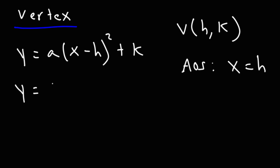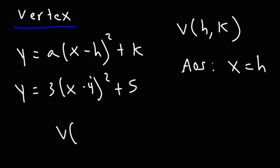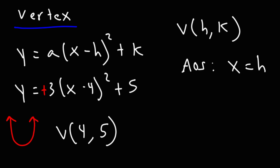For instance, if we have y = 3(x − 4)² + 5, even though you see negative four inside, you change the sign: h = 4, k = 5, so the vertex is (4, 5). Since a is positive, the parabola opens upward, which means the vertex represents a minimum. The minimum is located at x = 4, and the minimum value is 5.